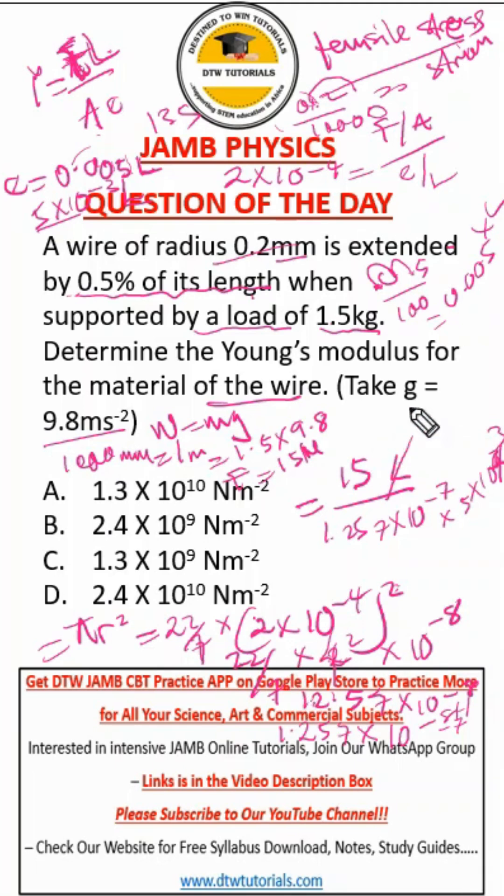And what is our E? Our E is times five times 10 to the power negative three. Do you see that? Don't forget the L because it says 0.5% of its length. So it means now that this L will then cancel out this L. So what you do is just divide with your calculator. Resolve the standard form.